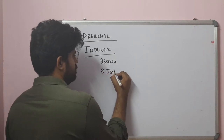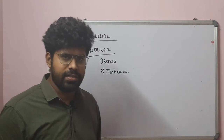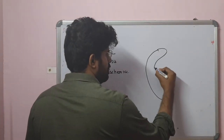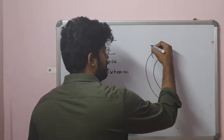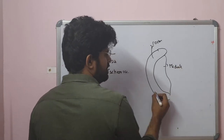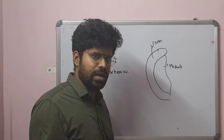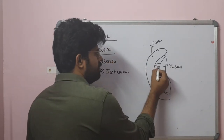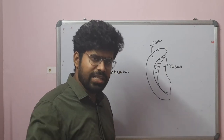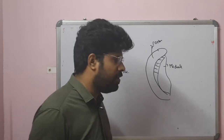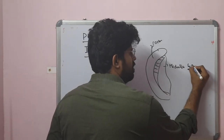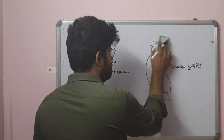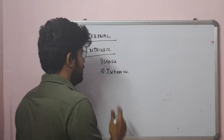Regarding ischemia: the kidneys receive 20% of cardiac output, especially the renal cortex. The renal cortex has abundant blood supply from renal arteries, whereas the renal medulla is notoriously hypoxic. The outer medullary area is both metabolically active and has decreased blood supply, making it more vulnerable for ischemia. The S3 segment of the proximal convoluted tubule is the most hypoxic and most important site to sustain hypoxic injury.